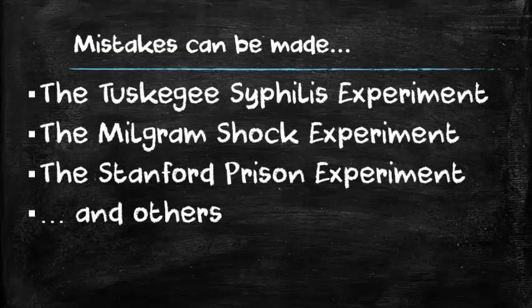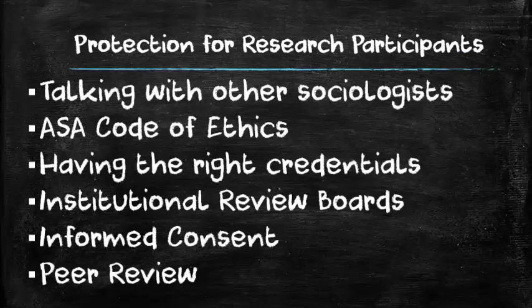So how do we make sure that our research participants are protected? There are a lot of things we can do. Of course, we want to talk with other sociologists to see if what we have in mind for research sounds reasonable, and you iron out those questions and problems you might have before you even move forward. You also use the ASA code of ethics to guide your behavior. You also want to make sure that you have the right credentials and education to do the research that you want to do.